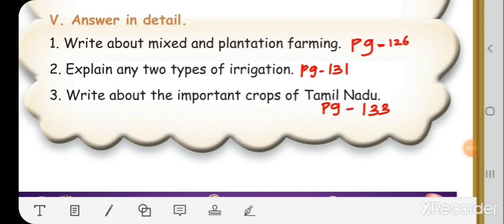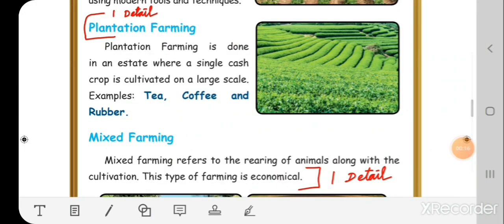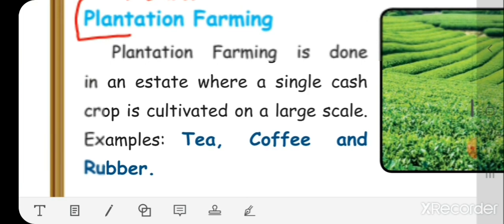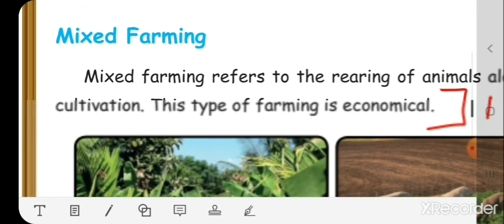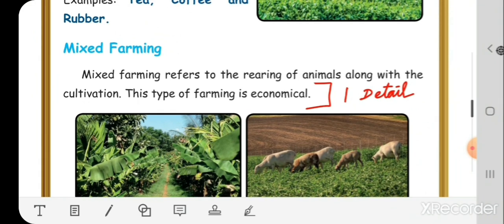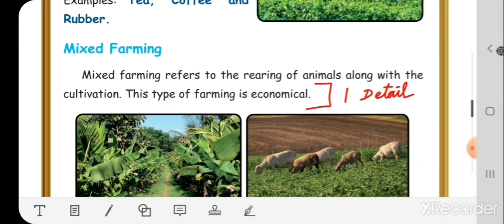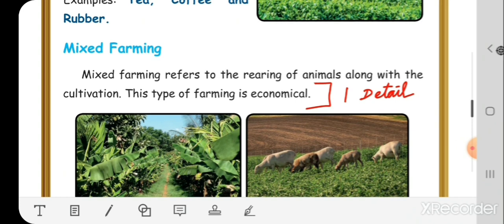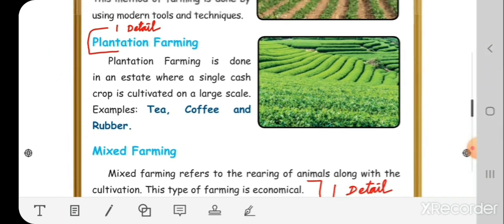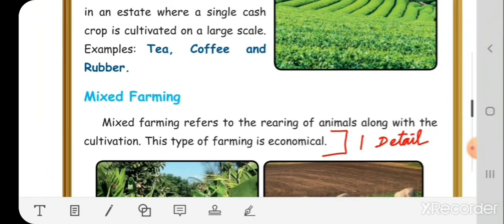Answer in detail, first question: Write about mixed and plantation farming. This answer is on page number 126. Plantation farming is done in an estate where a single cash crop is cultivated on a large scale, for example tea, coffee, and rubber. Mixed farming refers to the rearing of animals along with the cultivation. This type of farming is economical. These two types you have to write.